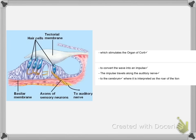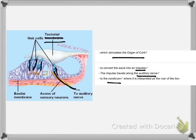Taking a closer look at the organ of Corti, these vibrations stimulate it. The organ of Corti is a set of sensitive hair cells attached to a nerve, with a tectorial membrane sitting above them. This membrane moves backwards and forwards, stimulating the very top tips of the hair cells — that is how you generate the electrical impulse. That impulse is then sent along the auditory nerve and finally to the cerebrum.